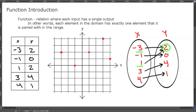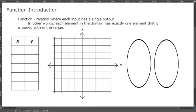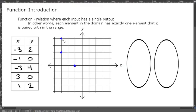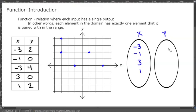Let me show you an example that's not a function. We have: (-3, 2), (-1, 0), (-3, 4), (3, 0), and (1, 2). Our x values are: negative three, negative one, negative three again, three, and one. Our y values are: two, zero, four, zero, and two.